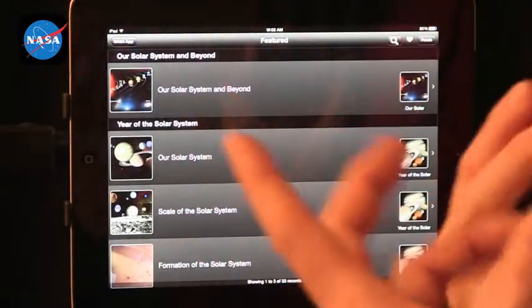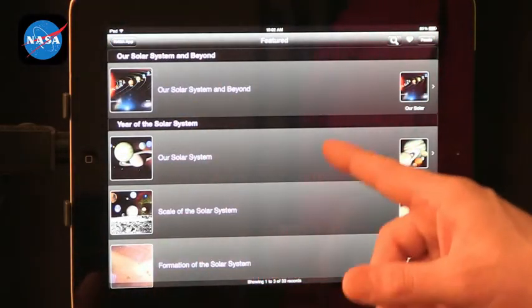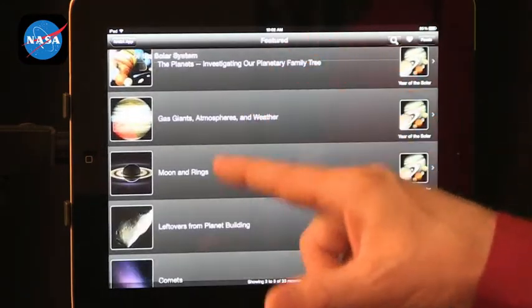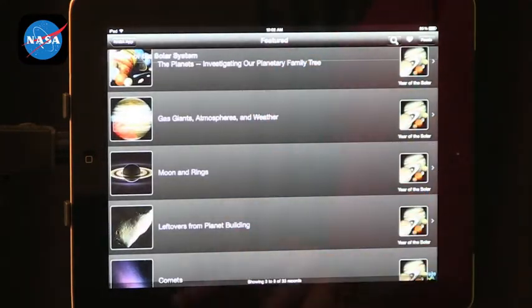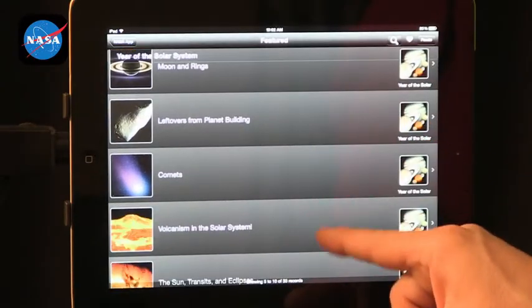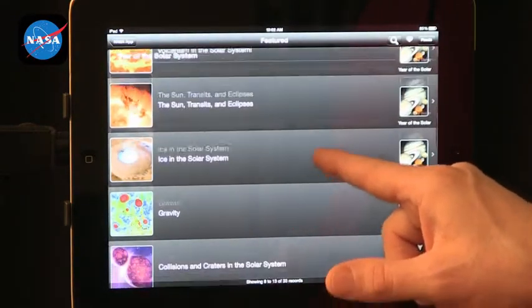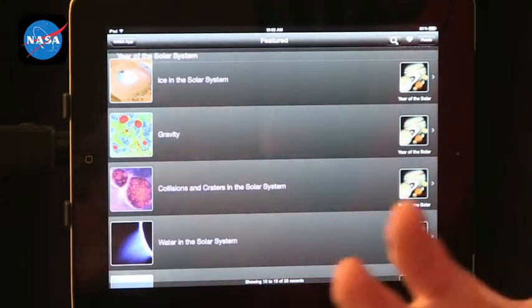So that was just the basic information. But you can see that you can explore it in many different ways. You can go to moons and rings, comets, volcanism, ice, gravity, etc. So there's lots of ways to look at it. Not just planet by planet, but by topic and other ways. So that's another aspect of the NASA app.